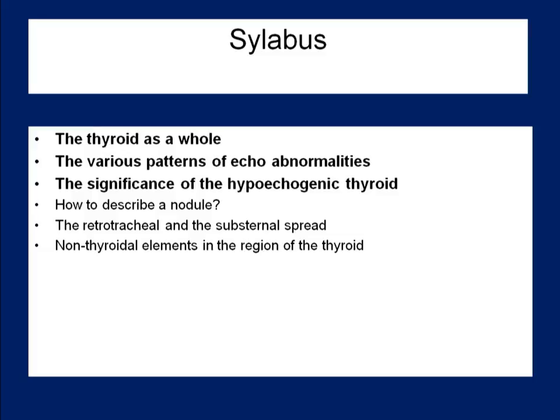In this lecture we focus on the thyroid as a whole. Although in everyday practice we focus on the nodular goiter, we try to demonstrate that the description and analysis of the thyroid is not superfluous. The differentiation of discrete echo abnormalities, first of all hypoechoic areas, lesions and nodules, is the essential of thyroid ultrasound. We give some viewpoints to the differential diagnostics of these lesions. Finally, we briefly discuss the significance of the hypoechoic thyroid, that is the impact of ultrasound in the diagnosis of autoimmune thyroid disorders.